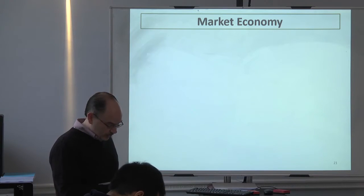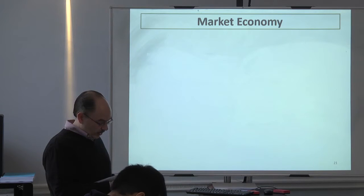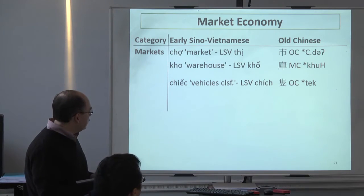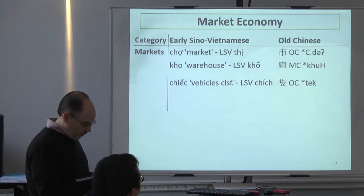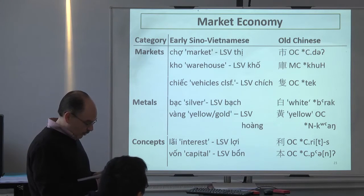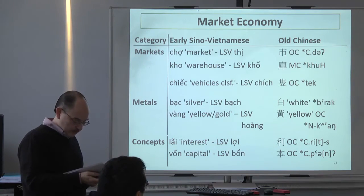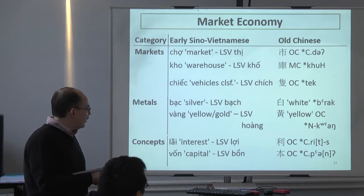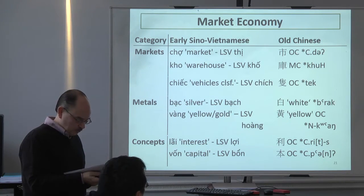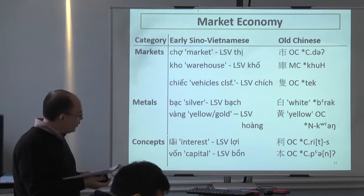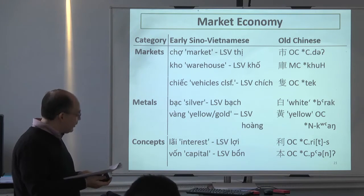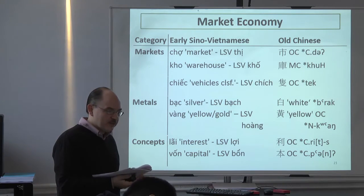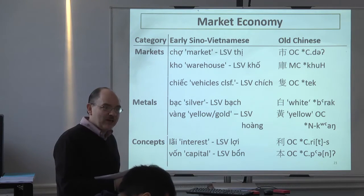What about trade systems? Certainly there was a state-level society at the Coloa site. We see a number of Old Chinese terms, or maybe somewhat later terms, from this period. While bronze was an important part of the Dong Son culture and had long been used there, silver, gold, and coins in the archaeological literature are only in the archaeological record after the establishment of Chinese administration. So in early Sino-Vietnamese we have this full range of market economy materials and concepts. It suggests a significant impact on the trade system and probably the development of a complex economic system.